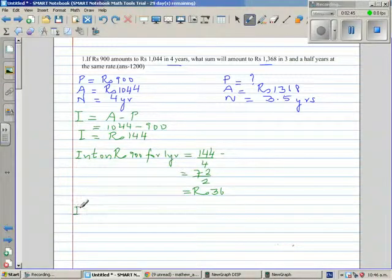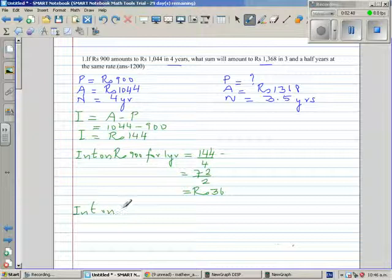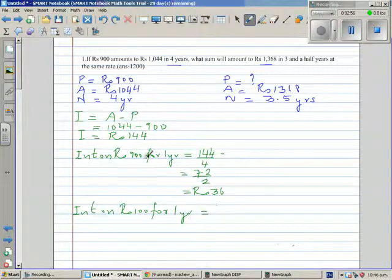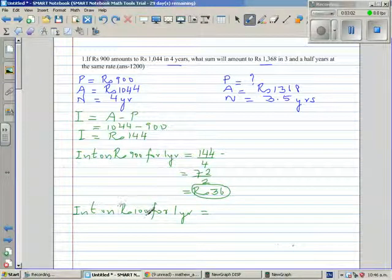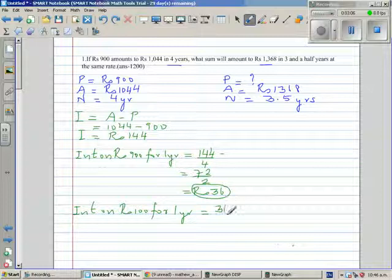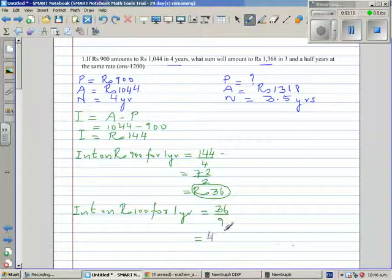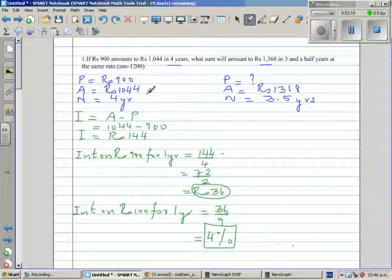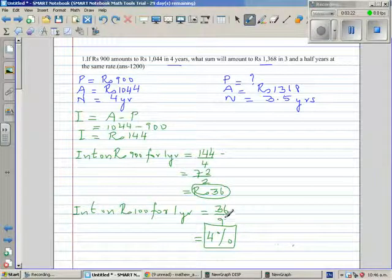So now let's ask, what's the interest on 100 for 1 year? For 1 year. This 36 is the interest on 900 for 1 year. So the interest on 100 for 1 year would be 36 divided by 9, which is 4. So the rate of interest is 4%. In other words, the rate at which 900 becomes 1,044 is 4%.